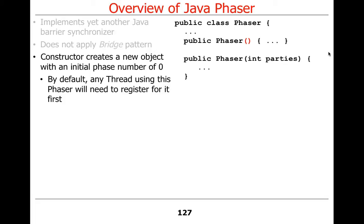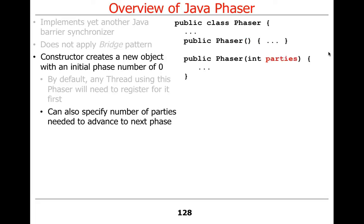By default, any thread using a phaser created with no parties will need to register first — that's a difference from earlier barrier synchronization mechanisms. With countdown latches and cyclic barriers, you had to tell it how many parties were involved when you created the barrier. With a phaser, you don't have to tell it anything. You can give it a parties count if you want, which indicates the number of parties that need to show up before the phase can advance. But this is optional and just a starting point — you can register other parties later on the fly.